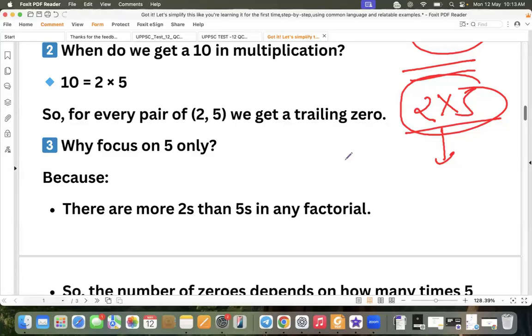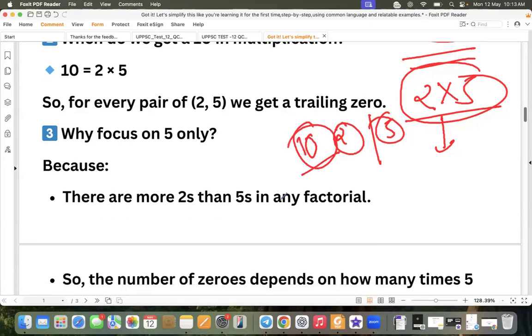And 5s are usually less than number of 2s. Not usually, always. Kisi bhi number me 2s zyada hi honge compared to 5. So we will just calculate the number of 5s, because without number of 5s there cannot be a formation of 10 or trailing 0. Understood.